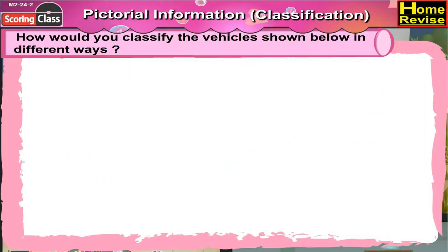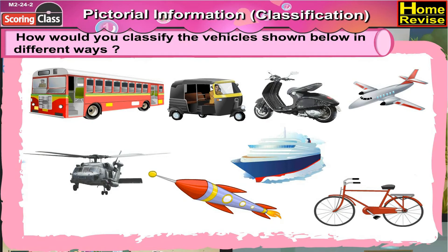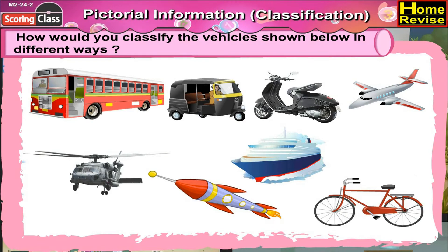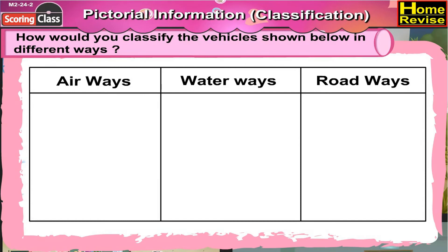How would you classify the vehicles shown below in different ways? Here are a few vehicles. We can classify them by making a table with different columns. The columns could be airways, waterways, and roadways.